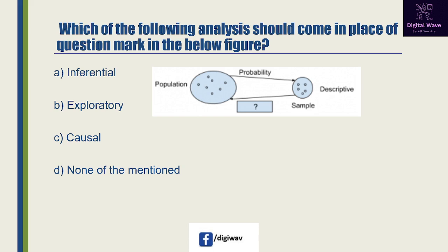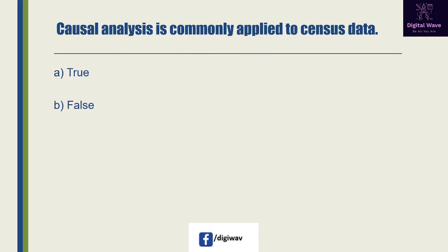Next question: which of the following analysis should come in place of the question mark in the below figure? Option A is 'inferential', option B is 'exploratory', option C is 'causal', and the last option is none of the mentioned. The right answer will be inferential, because inferential statistics is concerned with making predictions or inferences about a population from observations and analysis of a sample.